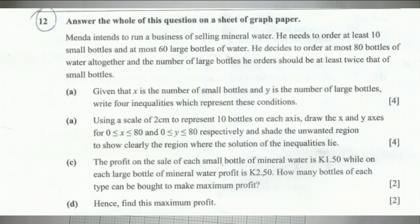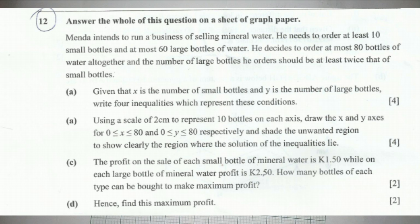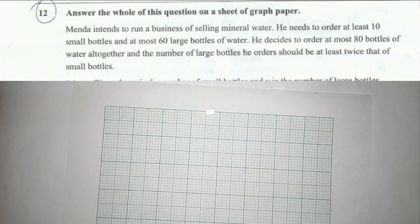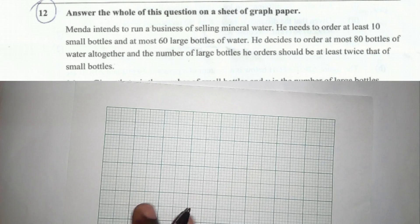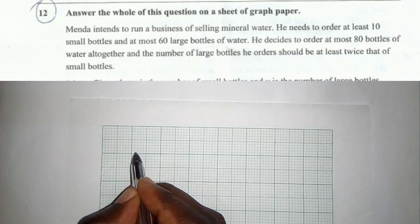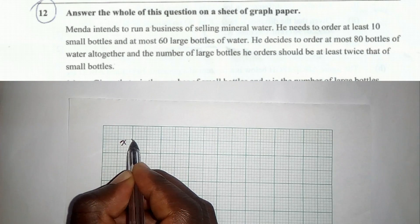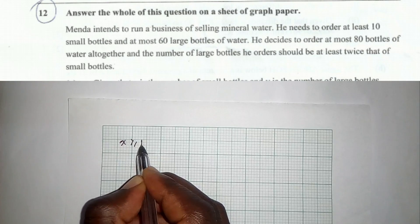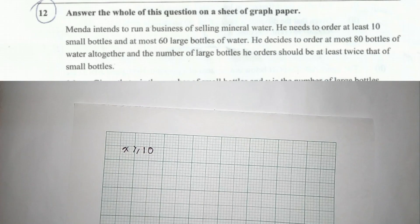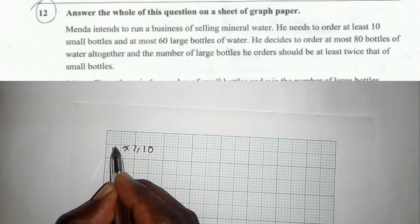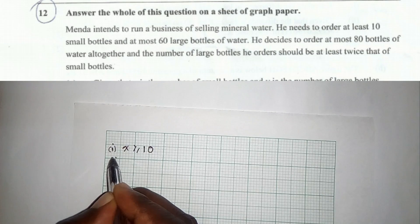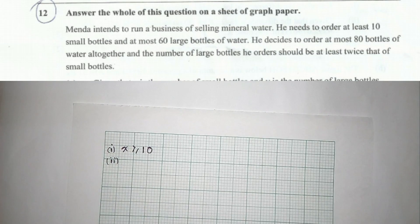We need to write the four inequalities. The first one is based on 'at least 10.' Small bottles will be represented by x and large bottles by y. So 'at least 10 small bottles' gives us inequality one: x is greater than or equal to 10.